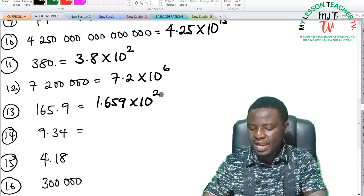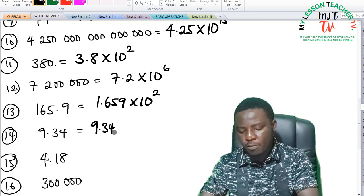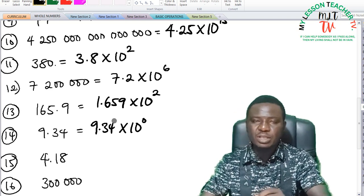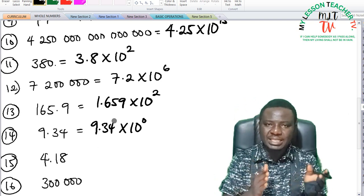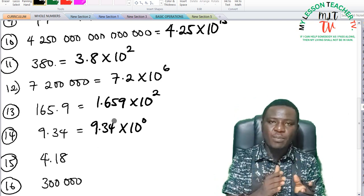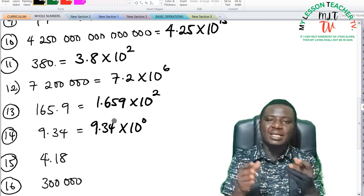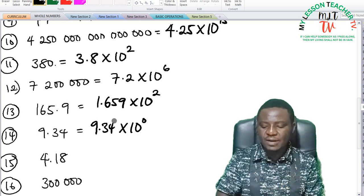Example 14, 9.34. 9.34 can be expressed as 9.34 times 10 raised to the power of 0, because 9.34 is a number that falls between 1 and 10. So moving the decimal point to your left a number of times makes it less than 1, and that violates one of the laws of standard form.